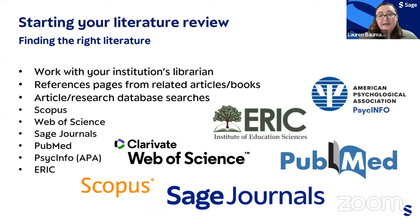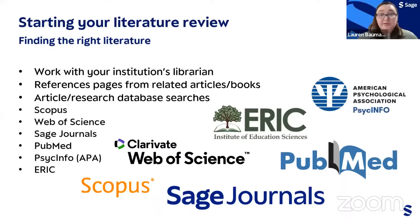And then, looking at article and research databases is a really useful thing. You can use optimized searches to find things related to your topic. That could be things like Scopus, Web of Science, SAGE Journals, PubMed if you're in the medical field, PsychInfo if you're doing psychology research, ERIC related to education research, and there are also different search engines related to specific fields as well. Those will be helpful as you figure out what your research topic is and narrow it down to find the best research to support your growing literature review.